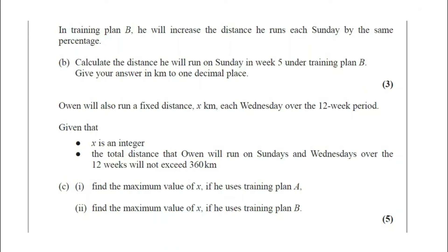Part B: In training plan B, he will increase the distance he runs each Sunday by the same percentage. Calculate the distance he will run on Sunday in week 5 under training plan B. Give your answer in km to 1 decimal place.